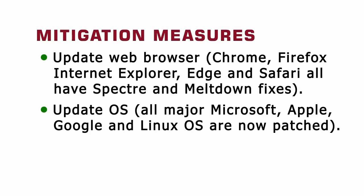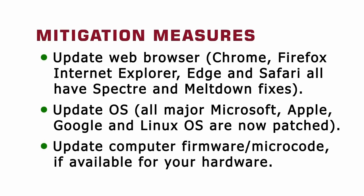The third line of defense is to update the firmware or microcode that controls how the processor interfaces with the operating system and applications. Unfortunately, this is where things get trickier, as these updates are specific to different computer hardware. Every user will need to obtain appropriate patches from the manufacturer of their particular computer or motherboard supplier — something most users are not familiar with. There's also the problem that firmware updates are not yet available for older microprocessors, and may never become available for computers more than a few years old.